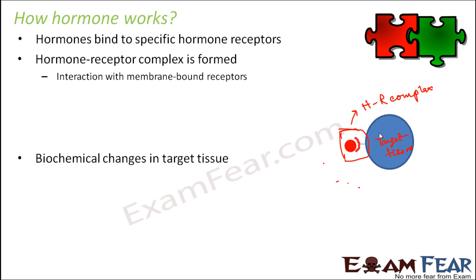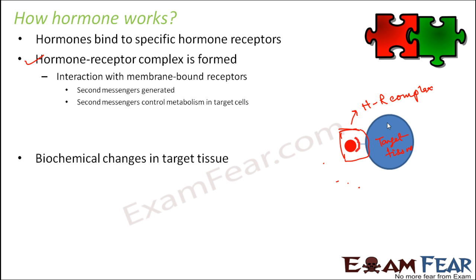There are two ways by which hormone-receptor complex can be formed, since receptors can be of two types. If the receptor is a membrane-bound receptor, some hormones do not enter inside the target cell at all — they will just interact with the membrane-bound receptors. As soon as they combine with the membrane-bound receptors, the hormone-receptor complex is formed and second messengers are generated. Those second messengers will regulate the activities taking place inside the target cell and bring about the biochemical changes. So the second messengers control the metabolism in target cells.